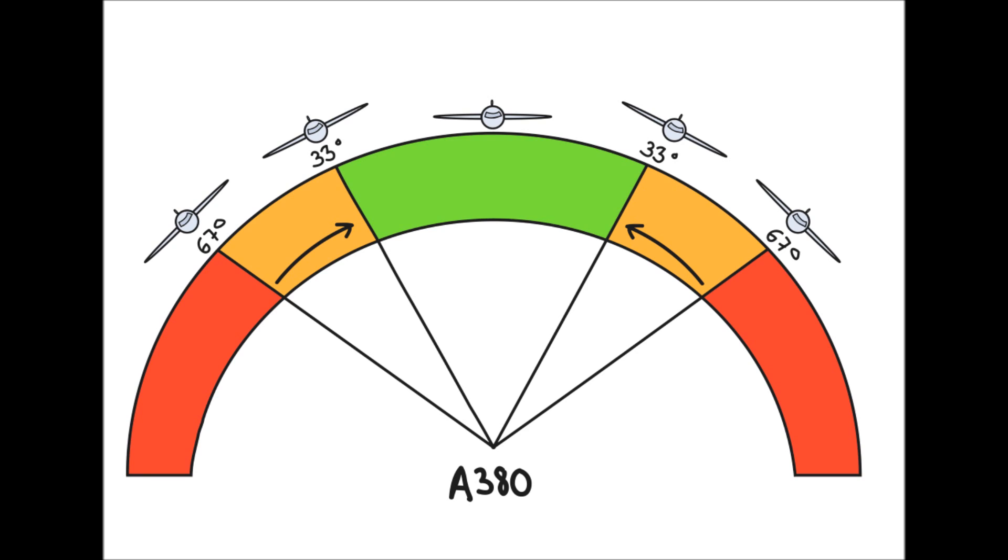In the green zone, the pilot is free to control his plane. He can go in the orange zone, but as soon as he releases the controls, the plane will automatically get back to a position of 33 degrees.